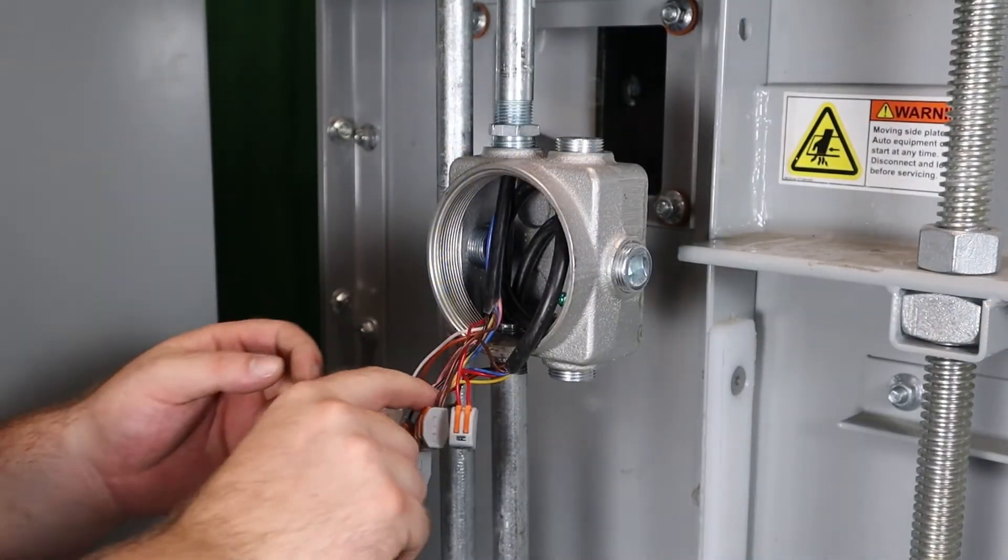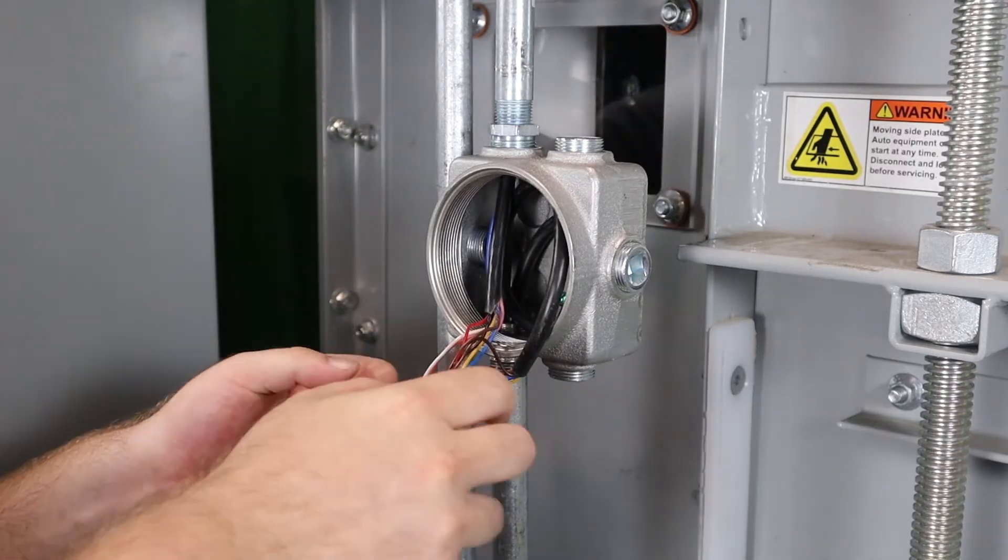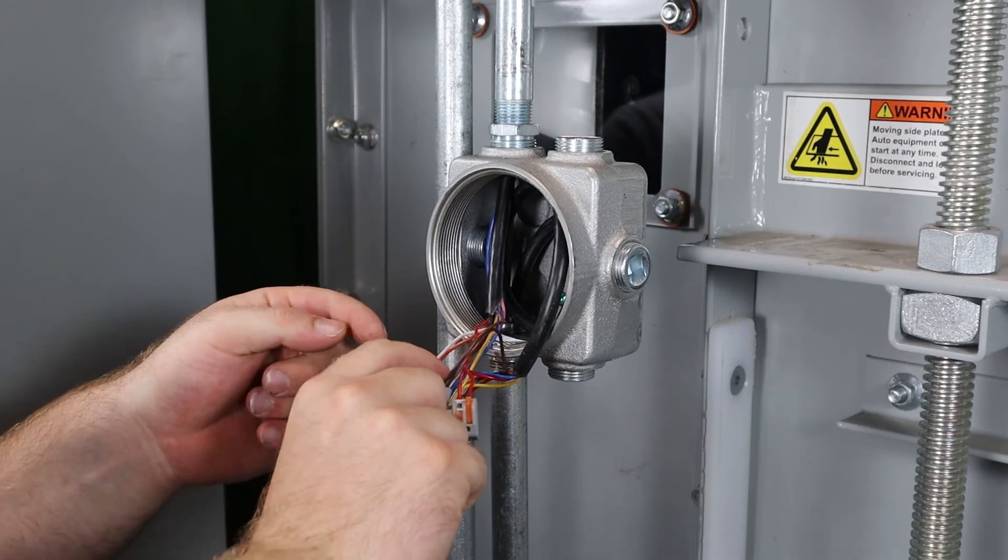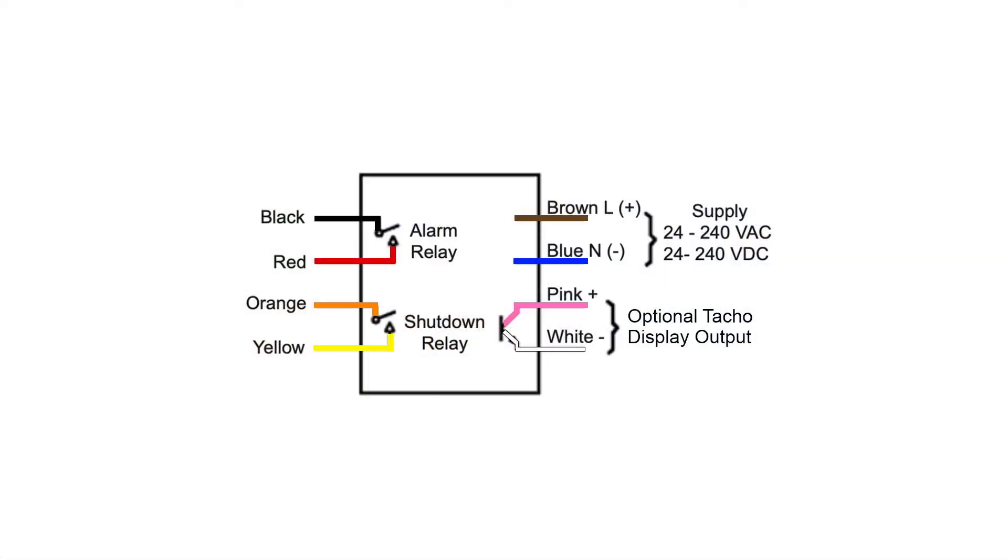Now to wire the unit up. First, connect the wires directly into the control circuit or into the plant PLC. There are eight wires on the M800: two for power, two for alarm, two for shutdown, and two for the display.